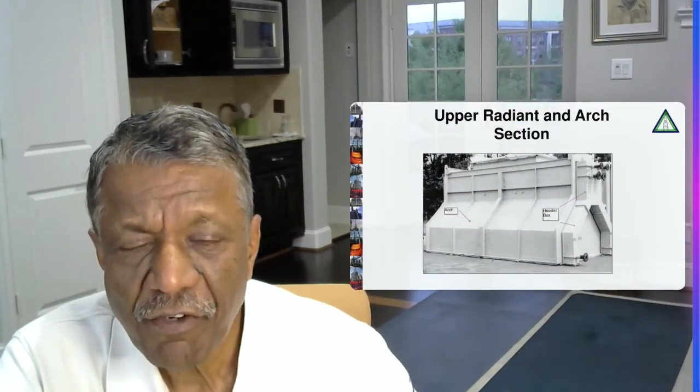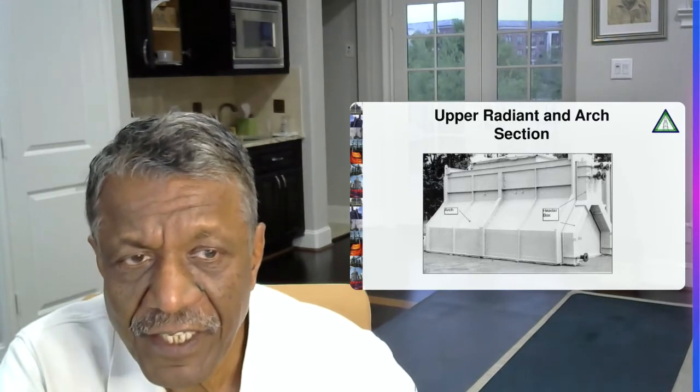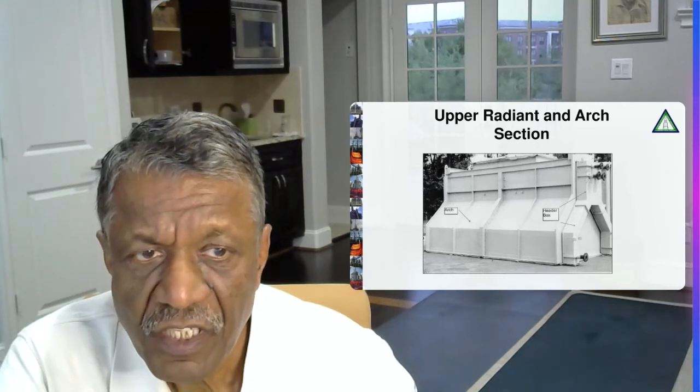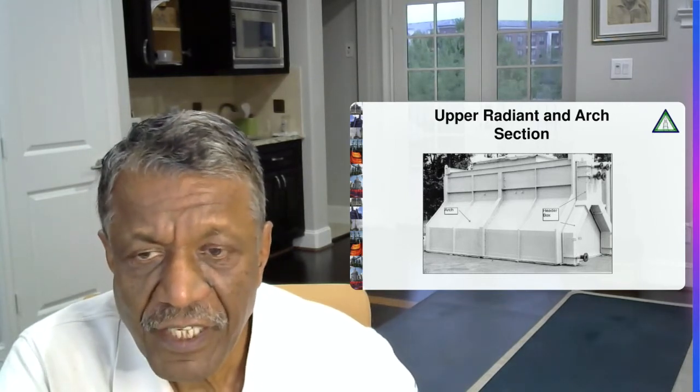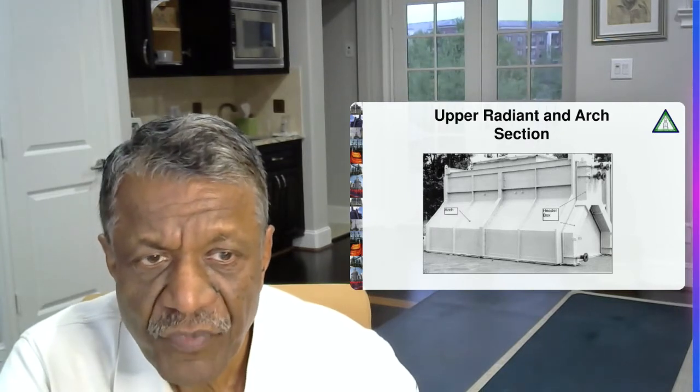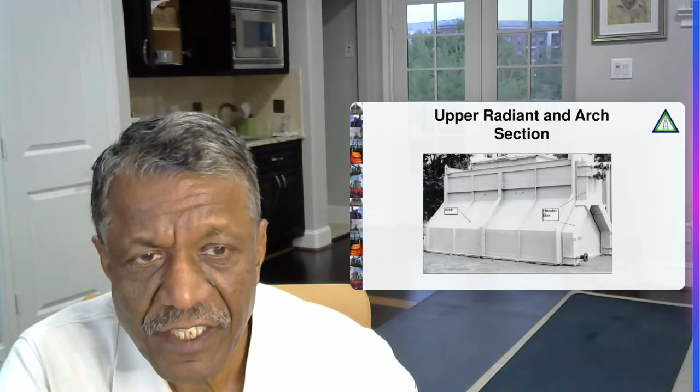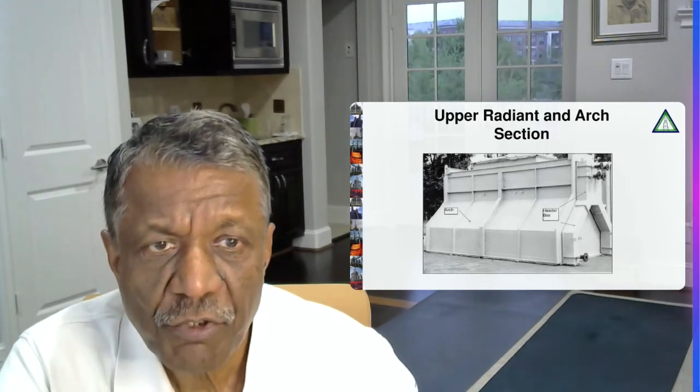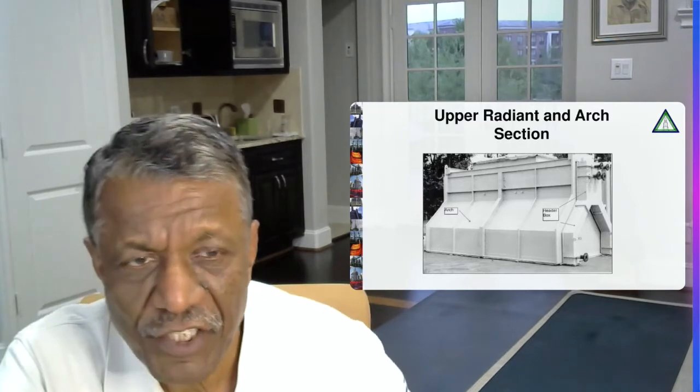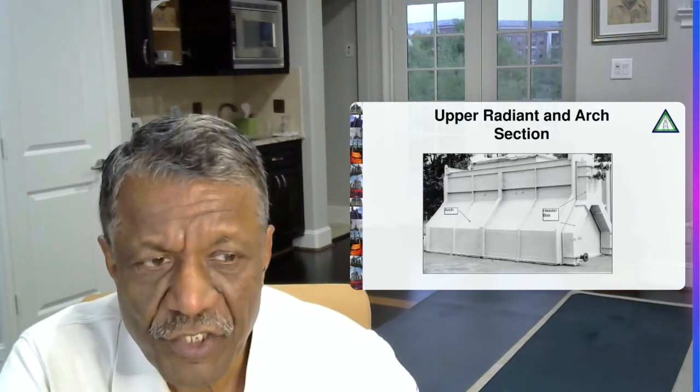The second type of heater we normally see in the industry is a cabin heater. And here is a picture of an upper radiant section and arch section. And you can see the header boxes. In a cabin heater, the tubes are laid out horizontally and we have header boxes sometimes on both the sides which are containing the return bends. You can also see, this is a very small heater, so you can see a convection section in this picture as well.